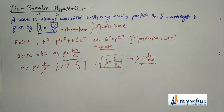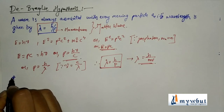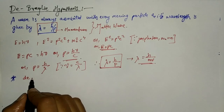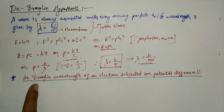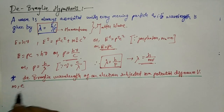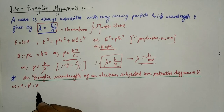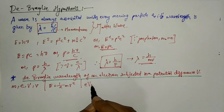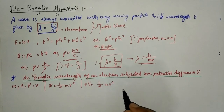An important exam topic is finding the De Broglie wavelength of an electron subjected to a potential difference. Consider an electron of mass m and charge e subjected to a potential difference V, so it acquires velocity v. Its kinetic energy is ½mv².